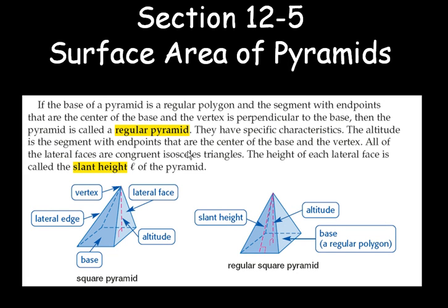If the base of a pyramid is a regular polygon and a segment with endpoints that are the center of the base and the vertex is perpendicular to the base, then the pyramid is called a regular pyramid. They have three specific characteristics. The altitude is the segment with endpoints that are at the center of the base and the vertex. All of the lateral faces are congruent isosceles triangles. The height of each lateral face is called the slant height, ℓ, of the pyramid.